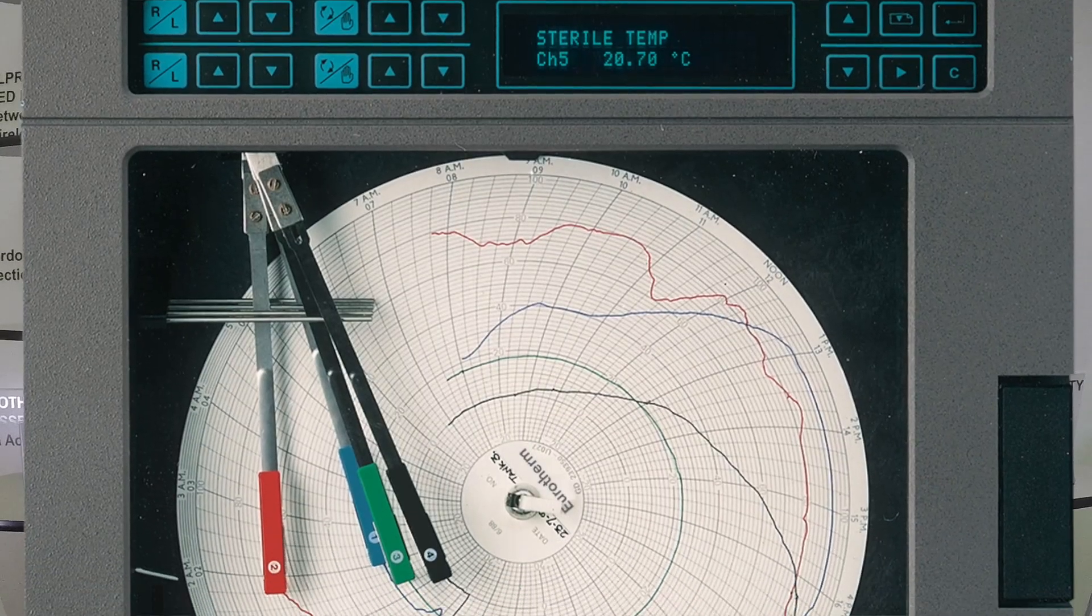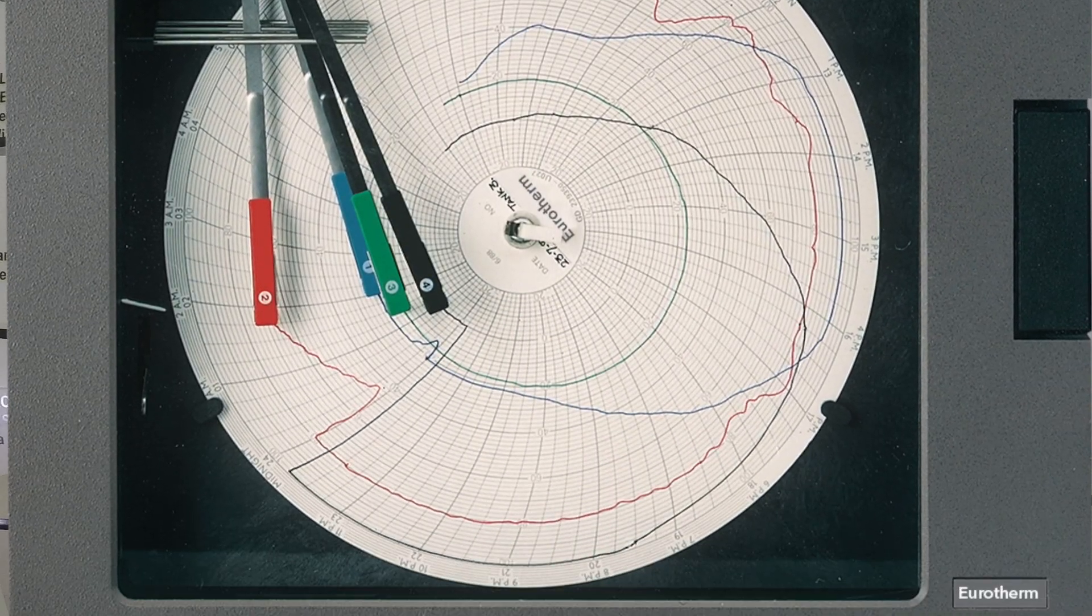Neal Systems has some exciting news for those still using a circular chart recorder. This is your standard Chesil 392 graphic recorder.